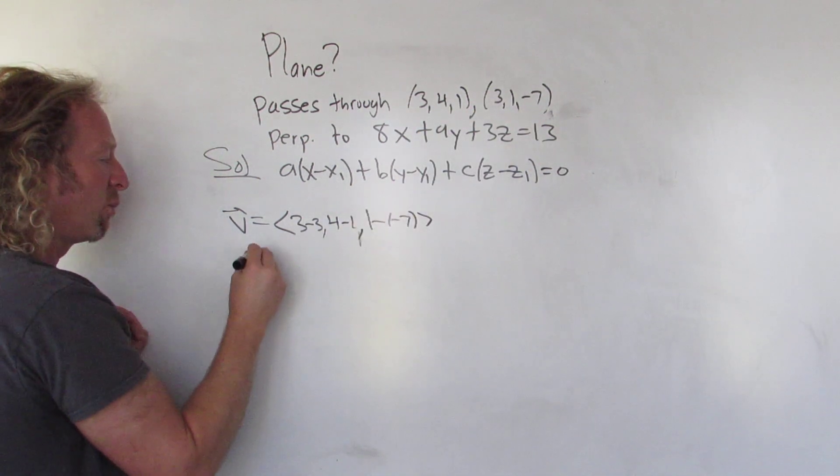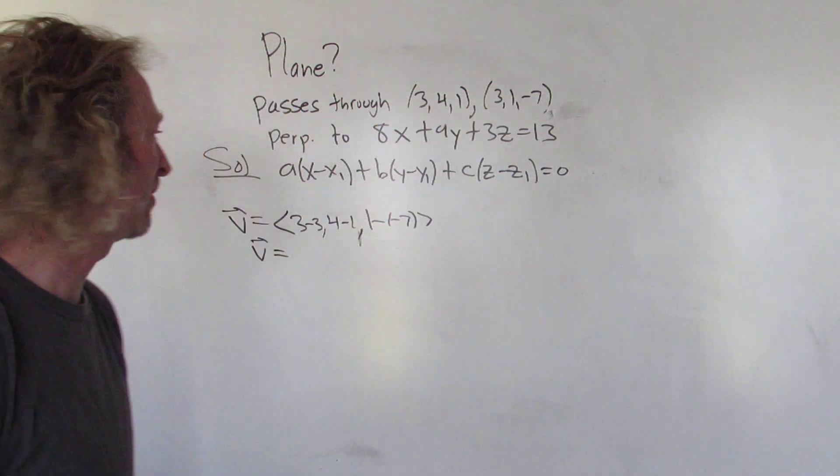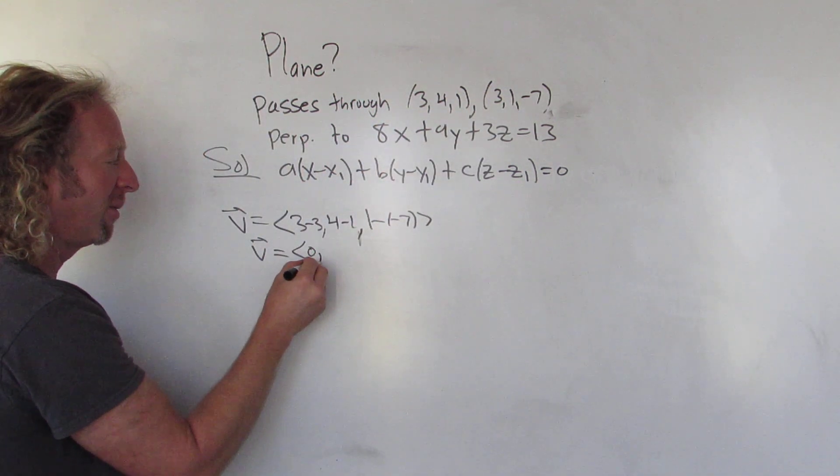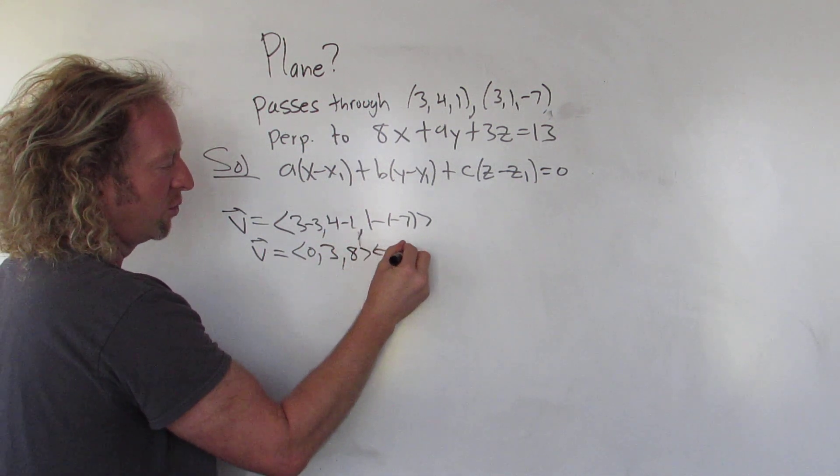We'll need it. And plus, I mean whenever you're given two points you probably have to find a parallel vector. So this is 0, 3, and then 1 plus 7 is 8. So this vector is parallel to our plane.